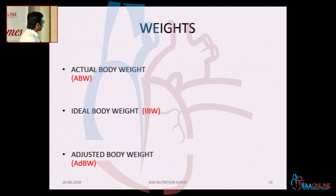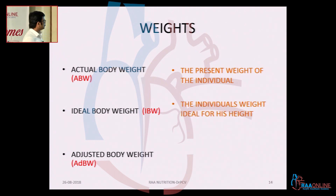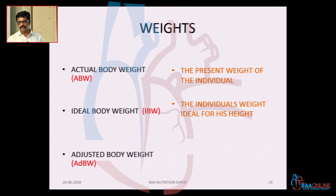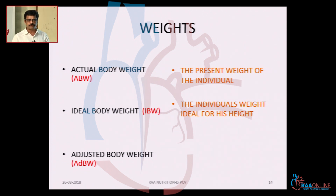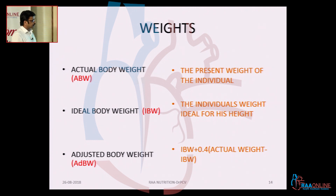What do we mean by actual body weight, ideal body weight, and adjusted body weight? Actual body weight is the present weight of the individual on a given day. Ideal body weight is the individual's weight ideal for their height. As critical care physicians, we ventilate patients based on ideal body weight, and all ventilators now have ideal body weight calculations. Once you know the height, you decide the ideal body weight and set tidal volume accordingly. Adjusted body weight is ideal body weight plus 0.4 of (actual body weight minus ideal body weight).